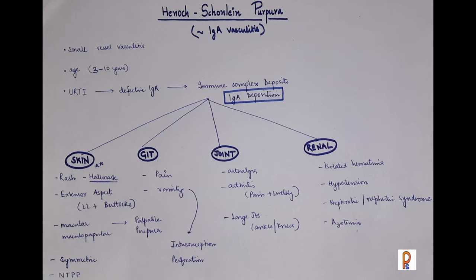Today I am sharing a video on Henoch-Schönlein Purpura. The newer name of it is IgA vasculitis. We call it IgA vasculitis because there is deposition of IgA in the affected organ. It is the most common type of vasculitis occurring in children, and it is a small vessel vasculitis.